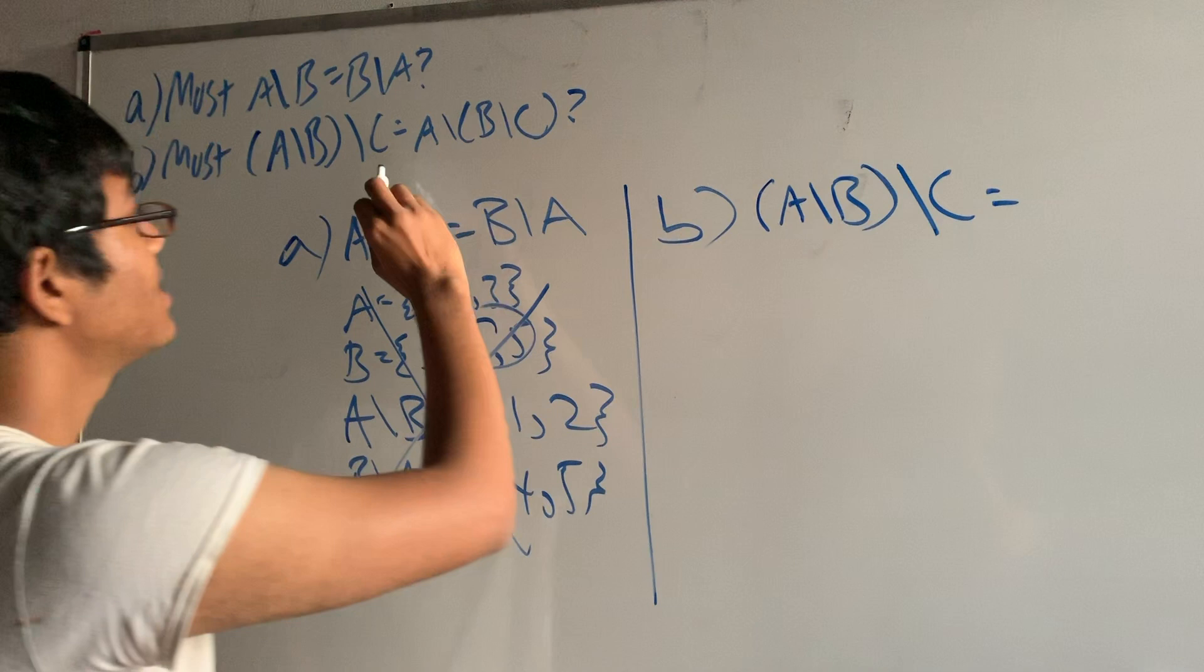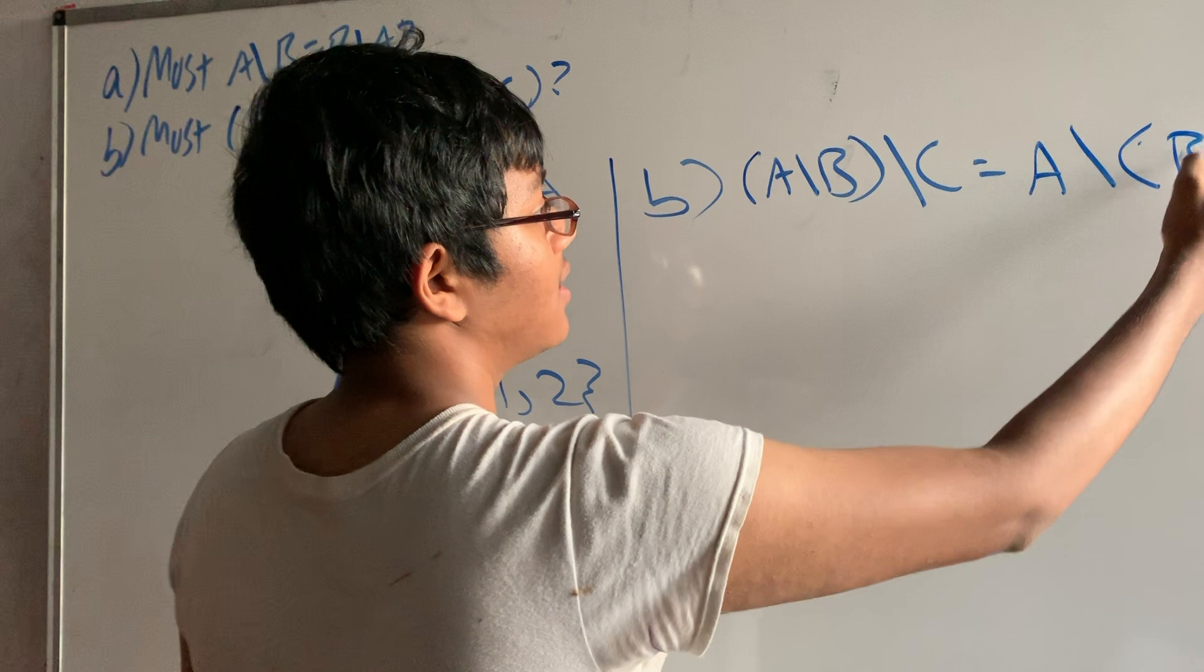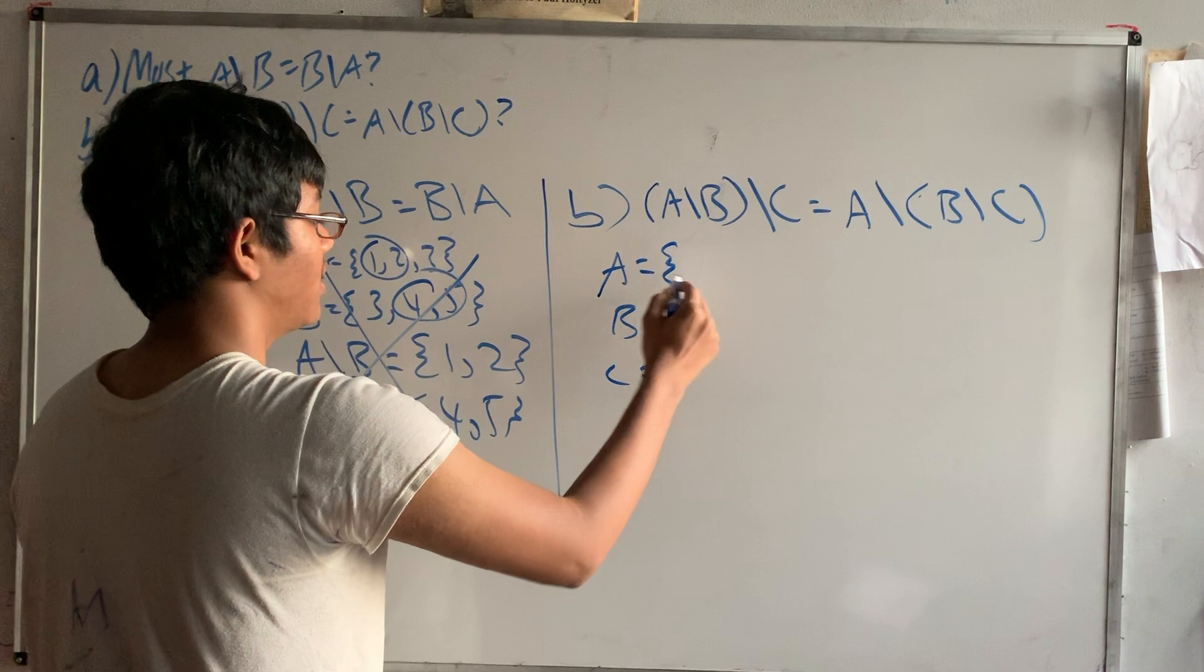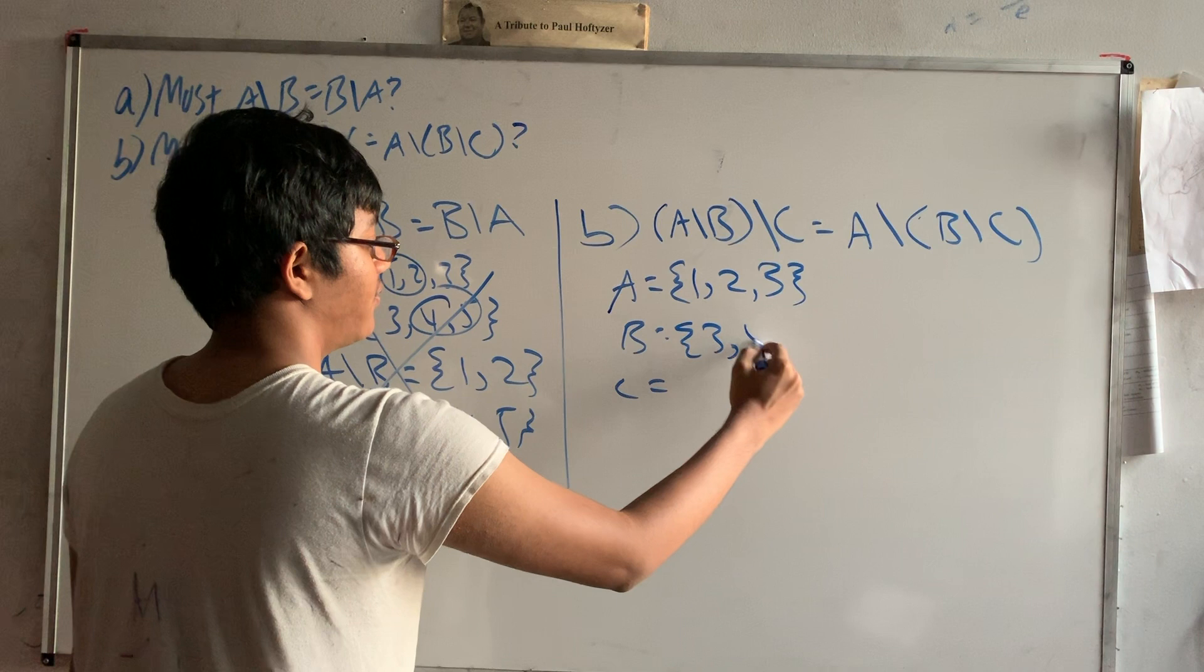And we need to see if this is equal. Okay, so let's apply the same method. Let me assign some sets to each one of these letters. So I'll do the same thing. A is {1, 2, 3}, B is {3, 4, 5}.